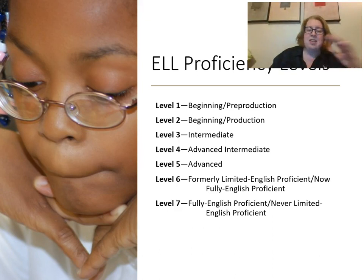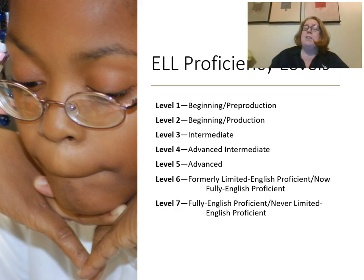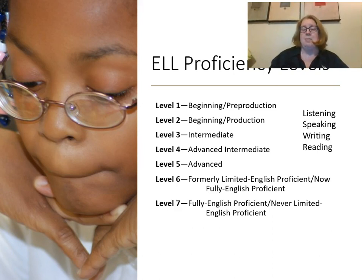ELLs develop proficiency at different levels that we can label. These levels might vary a little from what you learned in your TESOL classes. Level seven is when you've never been limited English proficient — a native English speaker. Even at level six, where a student is fully proficient, we might still want to consider language when we see a delay, because even after graduating from an ELL or TESOL program in school, they still might not have fully acquired the academic English we would expect. We should still consider their ELL status when we see difficulties. Students can be at different levels for listening, speaking, writing, and reading — each of those areas can be developing in a different way.